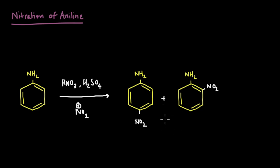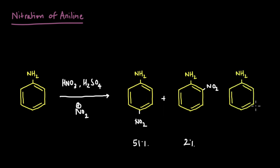But if we check how much product is formed, we find that the para product is around 51% — making it the major product. The ortho product is only 2%, which makes sense because NO2 is a large group and there will be steric repulsion at the ortho position. However, there's still the question of what the remaining 47% is. It turns out there is one more product: NO2 getting added at the meta position, giving a surprisingly high yield of 47%. This was not expected, since the electron density was not high at the meta position.